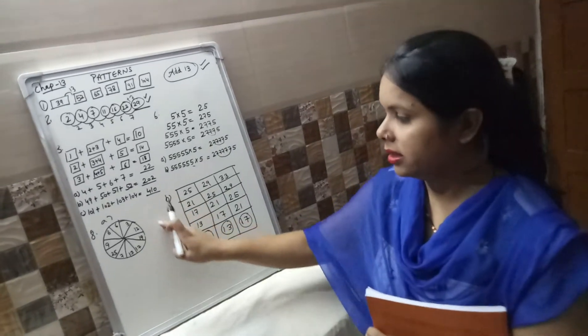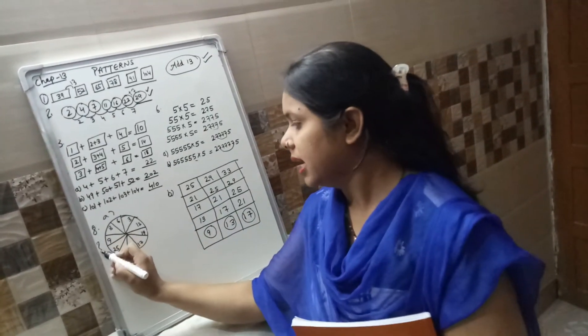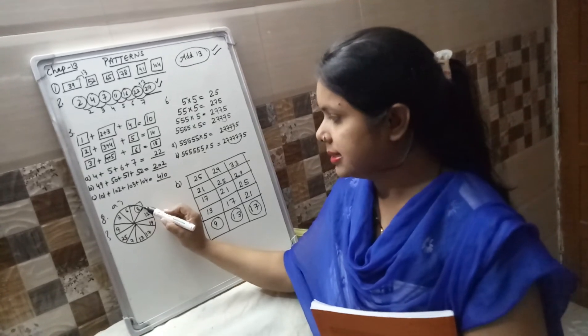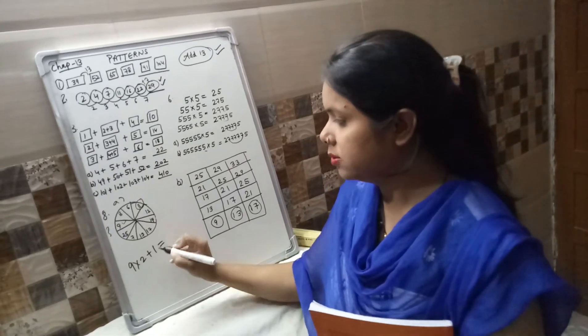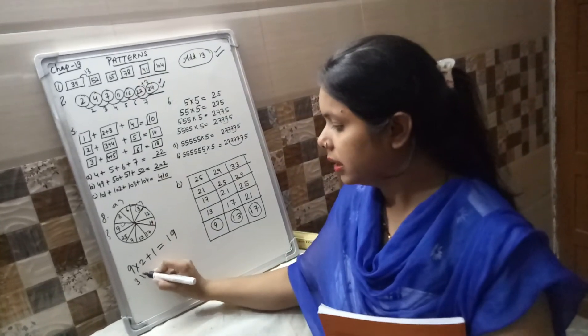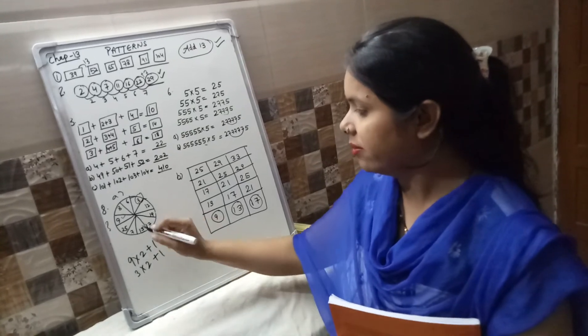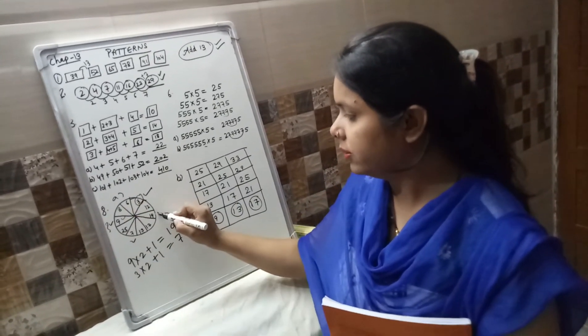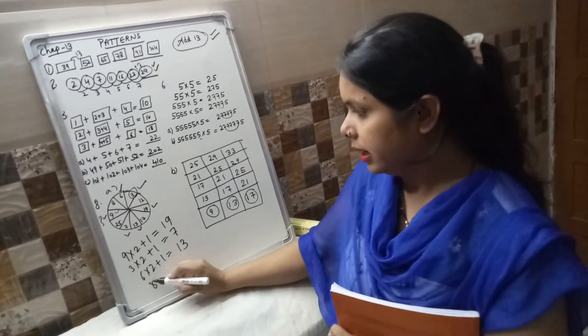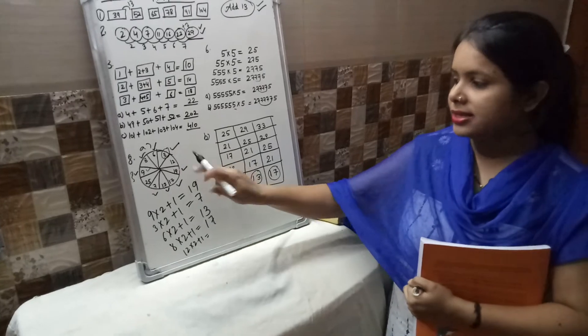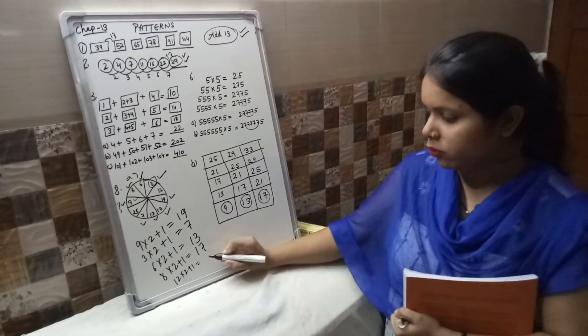In this question, you have to find what number matches. The rule is: take the number, multiply by 2 and add 1. For 9: 9 multiplied by 2 is 18, plus 1 is 19. For 3: 3 multiplied by 2 is 6, plus 1 is 7. For 6: 6 multiplied by 2 is 12, plus 1 is 13. For 8: 8 multiplied by 2 is 16, plus 1 is 17. For 12: 12 multiplied by 2 is 24, plus 1 is 25.